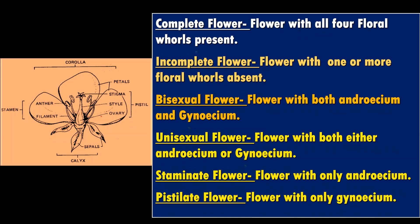This flower shows both androecium and gynoecium, so a flower with both androecium and gynoecium is called a bisexual flower. In some flowers such as cycas and papaya, the flower may show either androecium or gynoecium — such a flower is called a unisexual flower. In a male flower, androecium is present but gynoecium is absent; these flowers are also called staminate flowers. In a female flower, gynoecium is present but androecium is absent; such flowers are also called pistillate flowers.